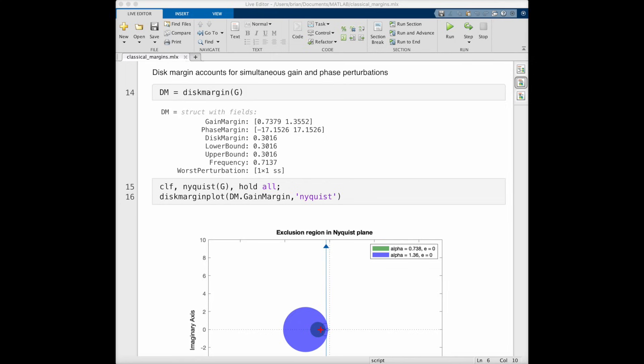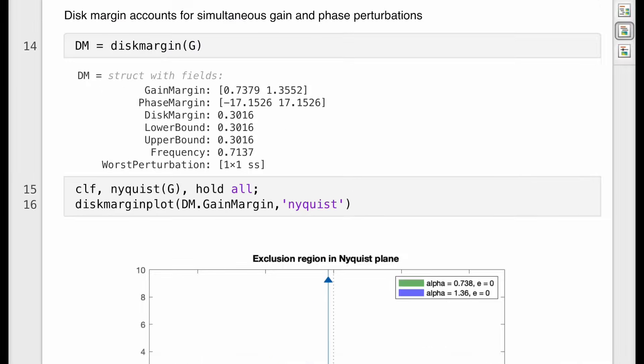Disk margins also have another benefit of being able to be applied to multi-input, multi-output systems, which classical gain and phase margins don't really handle very well. There is a lot to unpack here with all of these numbers, and we're going to talk more about disk margins later in the next video.